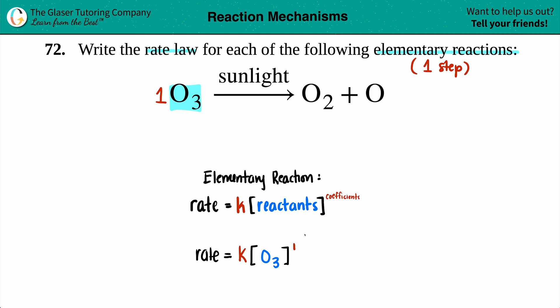In this balanced equation I have one O3, so I just raised the O3 to the first. You can add the one, you don't have to - anything raised to the first is itself anyway. This would be the final answer.